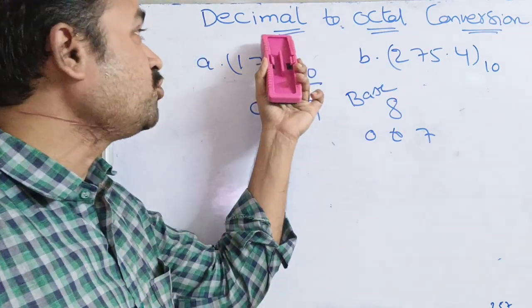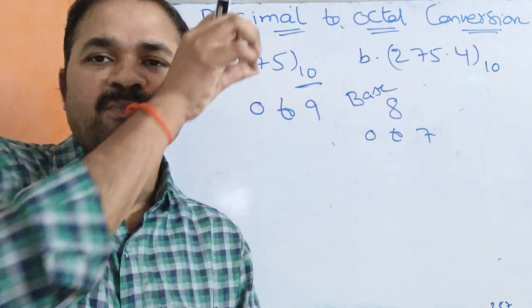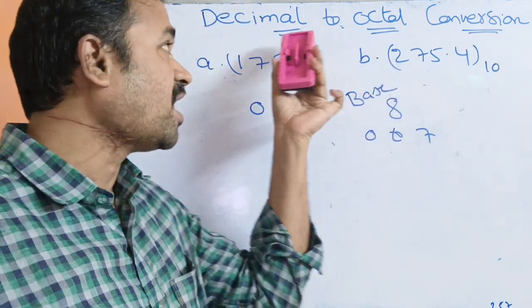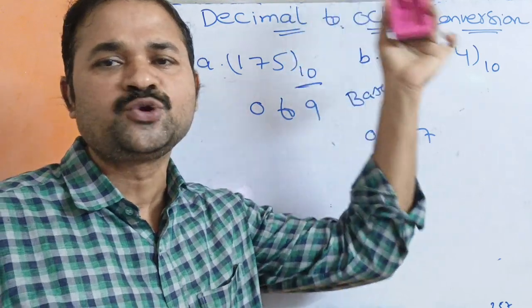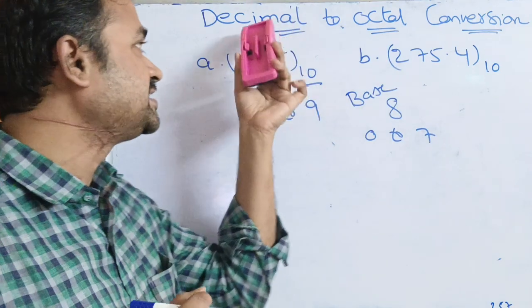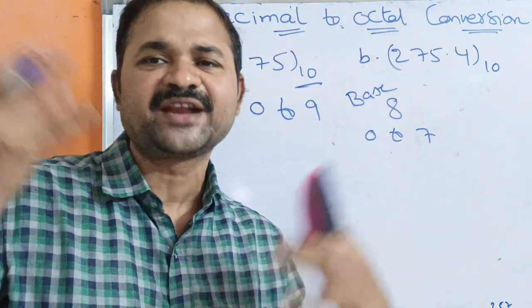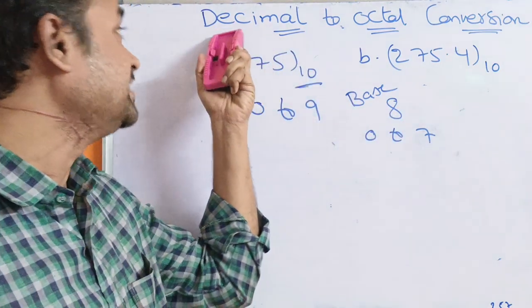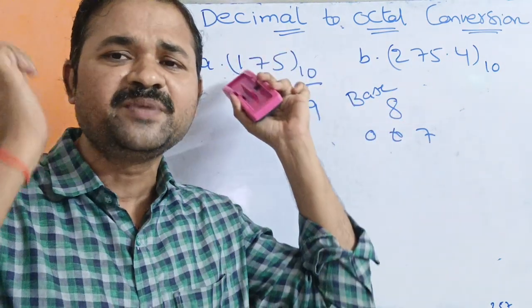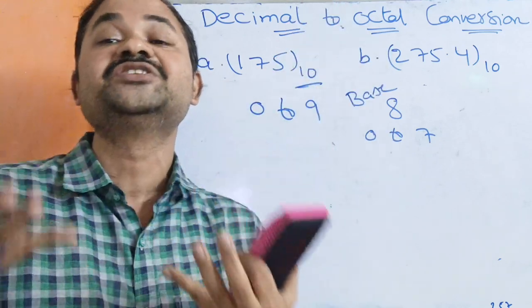If we want to convert a decimal to binary number, we divide the decimal number by 2. But here our aim is to convert decimal to octal, so we need to divide the decimal number by 8. For remembering purpose, let us assume that D means division. So if the source number is a decimal number, we simply need to perform the division operation.